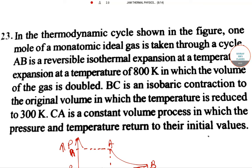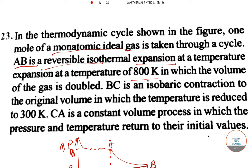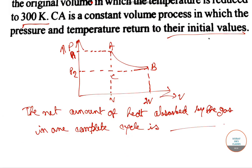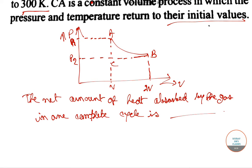Let's talk about the JAM Physics 2015 question paper — this is the question from thermodynamics. In the thermodynamic cycle shown in the figure, one mole of monoatomic ideal gas is taken through a cyclic process ABC. AB is a reversible isothermal expansion at 800 Kelvin in which the volume gets doubled. BC is an isochoric contraction to the original volume in which the temperature is reduced to 300 Kelvin. CA is a constant volume process in which the pressure and temperature return to their initial values. What is the net amount of heat absorbed by the gas in one complete cycle?